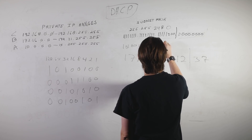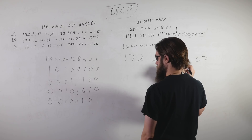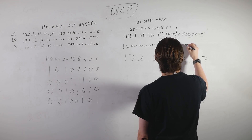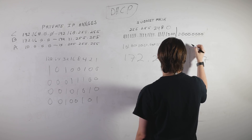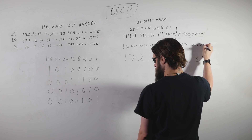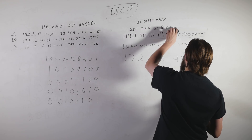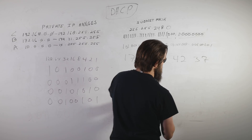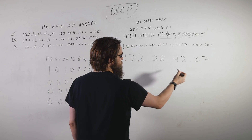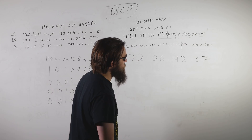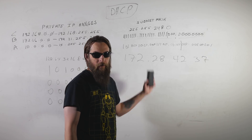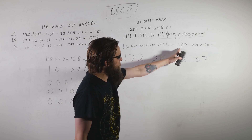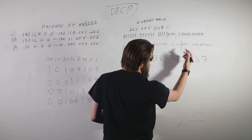Continuing the binary conversion: 42 is 00101010 as before, and 37 is 00100101. The subnet mask boundary now falls in the middle of the third octet — it's actually three bits into the last octet. Determining the network address is as easy as taking 42 and subtracting 2 to get 40, because we know those bits get zeroed out. So the network is 172.28.40.0.